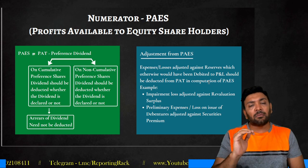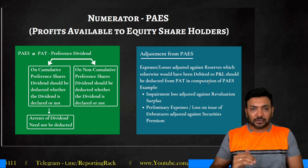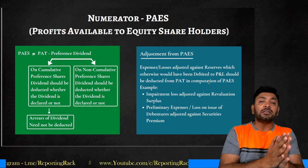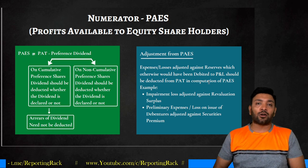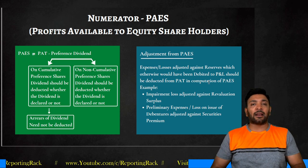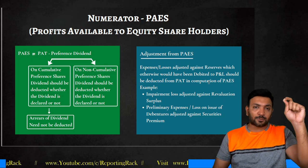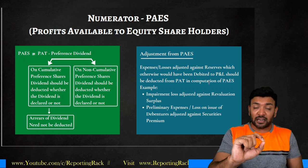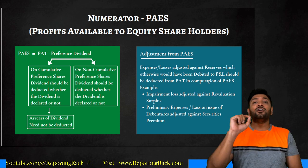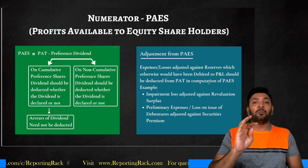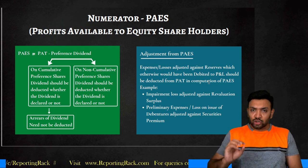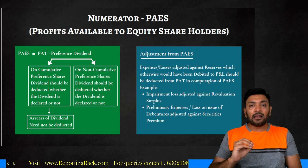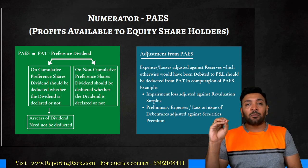After discharging the liability of preference dividend to preference shareholders, the balance profits are what we call profits available to equity shareholders. In formula: Profit After Tax minus Preference Dividend equals Profits Available to Equity Shareholders. Preference dividend is not debited to P&L because it is an appropriation of profit.